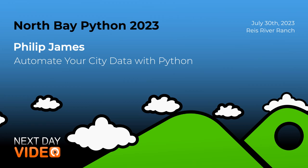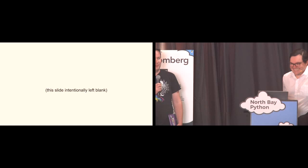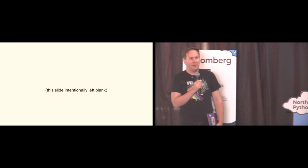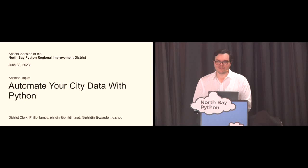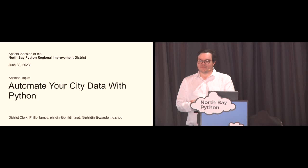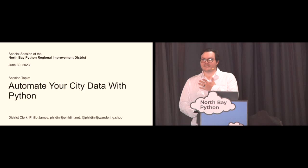As somebody who's been involved in our regional politics over the last couple of years, I was very excited to see this talk come in. Philip James is going to be talking about how to automate your city data with Python. Please make him welcome. Thank you all for attending this special session of the North Bay Python Regional Improvement District. Today's session topic is how to automate your city data with Python. I'm your appointed district clerk, Philip James.